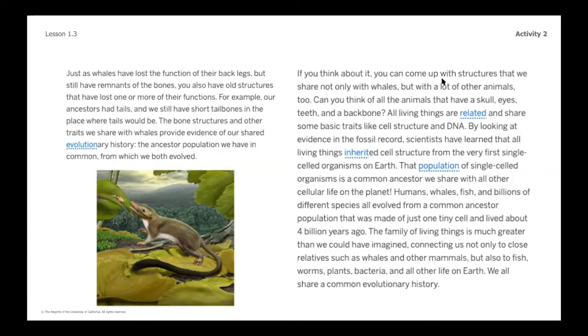If you think about it, you can come up with structures that we share not only with whales, but with lots of other animals too. Can you think of all the animals that have a skull, eyes, teeth, and a backbone? All living things are related and share some basic traits like cell structures and DNA. By looking at evidence in the fossil record, scientists have learned that all living things inherited cell structures from the very first single-celled organisms on earth. That population of single-celled organisms is a common ancestor we share with all other cellular plant life on the planet. Humans, whales, fish, and billions of different species all evolved from a common ancestor population that was made of just one tiny cell and lived about four billion years ago.